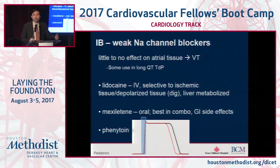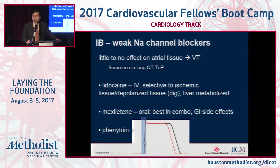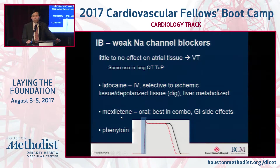The 1B agents are the weak sodium channel blockers. They have very little to no effect on atrial tissue, so their primary use is in ventricular tachycardia. Some use them to shorten the QT in long QT syndrome. They are such weak sodium channel blockers that they don't even prolong the QRS — they actually shorten the QT interval. Lidocaine is the IV form; it selectively binds in ischemic tissue so we use it in MI patients with VT, and it's metabolized in the liver. Mexiletine is the oral version of lidocaine, best used in combination as a TID medicine but can cause GI side effects.